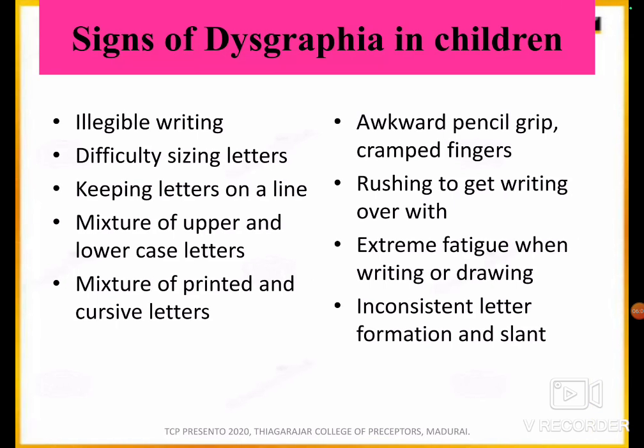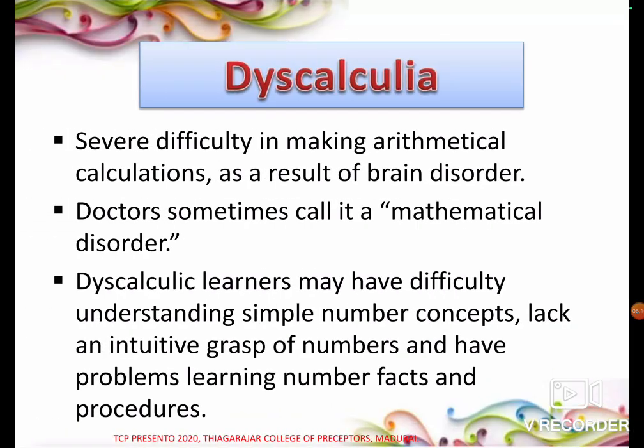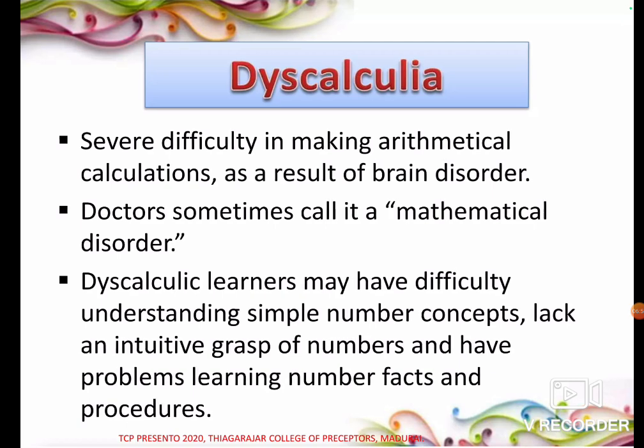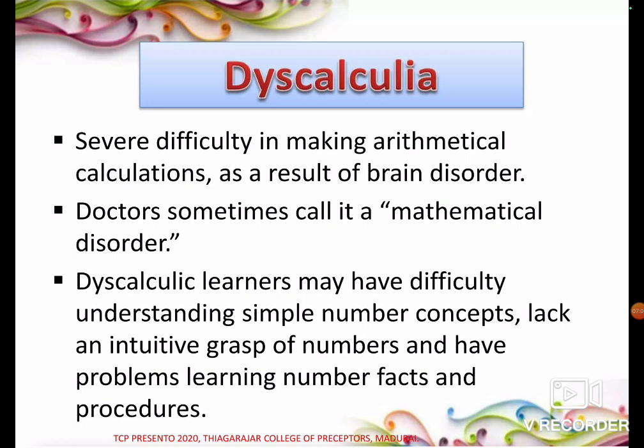The third learning disability is dyscalculia. Dyscalculia is a severe difficulty in making mathematical calculations as a result of brain differences — it is also called a mathematical disorder. Learners with dyscalculia have difficulty understanding simple number concepts; they are scared of numbers and maths. They lack an intuitive grasp of numbers and have problems learning number facts and procedures. Dyscalculia is about numbers.